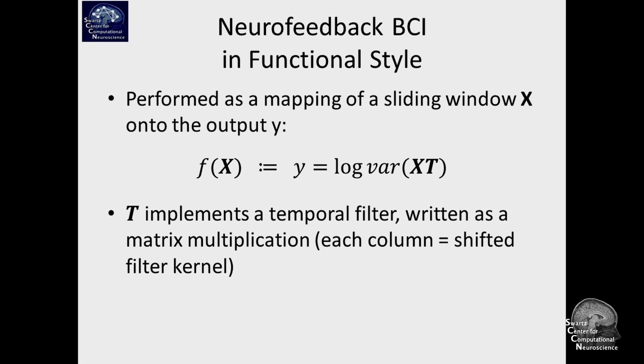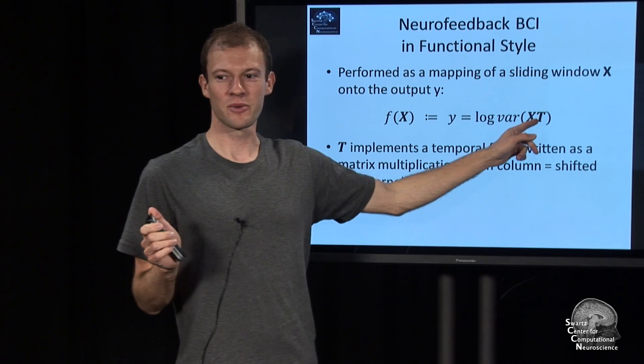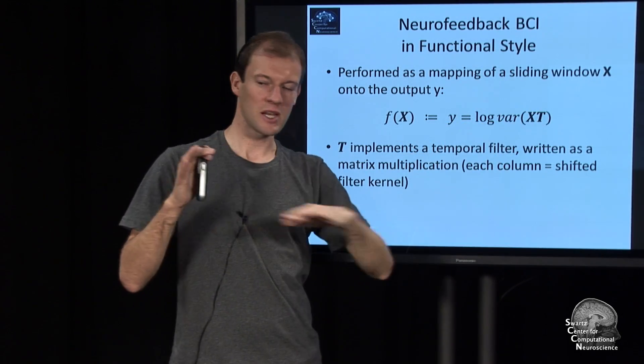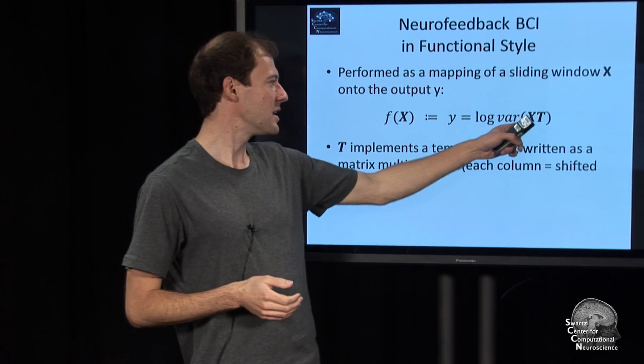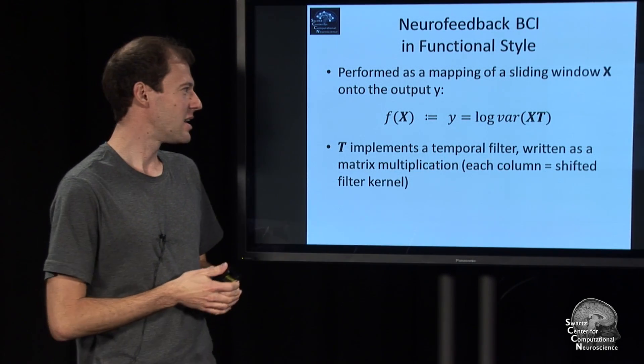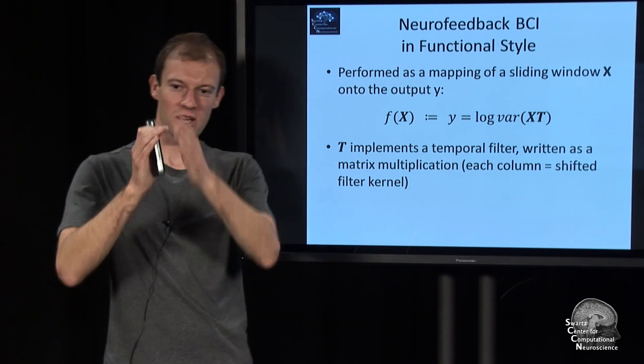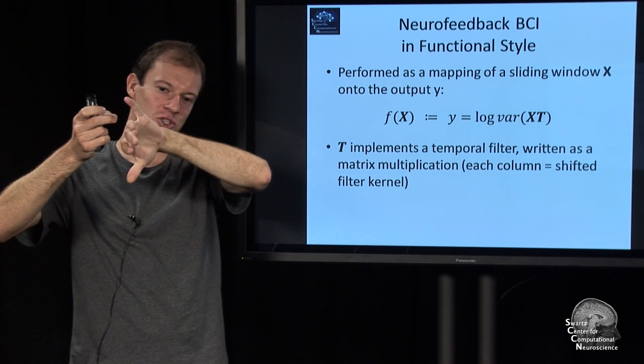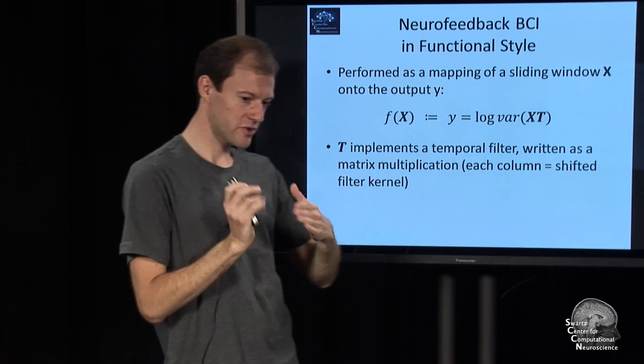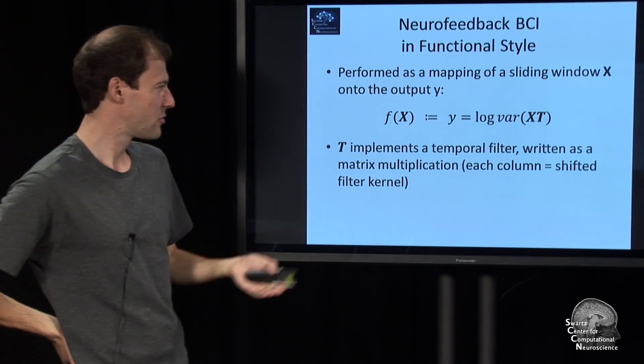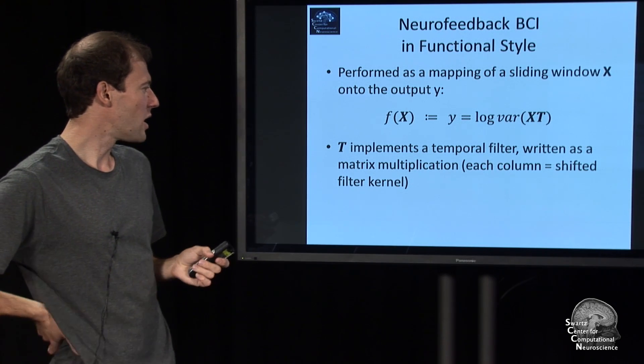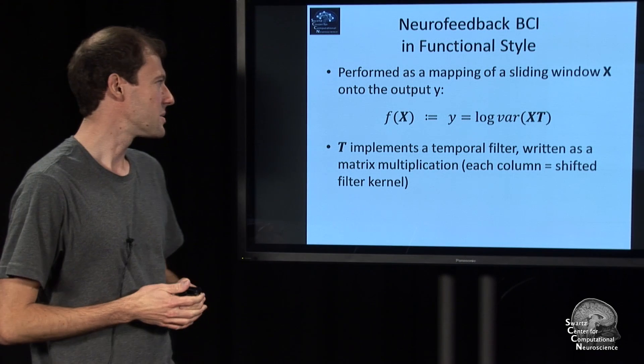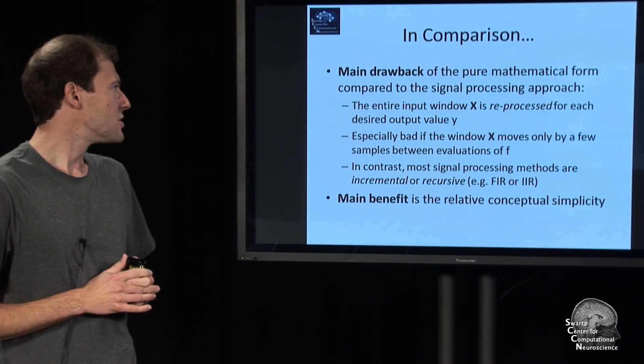This would be the equation for our neurofeedback BCI from the previous module. You have the chunk of signal X matrix. You apply a linear transform to that—this is the T matrix, a number of samples by number of samples matrix. It implements the linear filter. It turns out the matrix has the filter kernel in each column, and it's shifted for different samples because the filter kernel needs to be applied for different outputs with different shifts. That would be a very simple way to write the same thing.